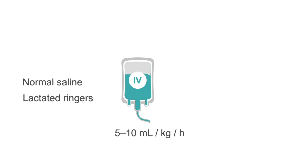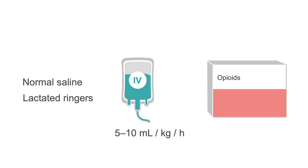IV fluid hydration at a rate of 5 to 10 milliliters per kilogram per hour is recommended. In some patients with severe dehydration from pancreatitis, more rapid repletion can be done with fluid boluses. Pain control for the predominant complaint of abdominal pain should be obtained with analgesics, such as hydromorphone, fentanyl, and meperidine. Opioids are safe and effective at providing pain control in patients with acute pancreatitis. A non-opioid alternative is ketorolac.